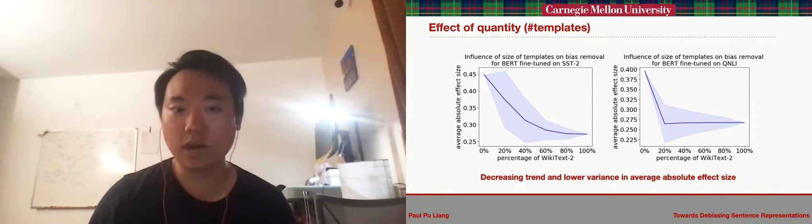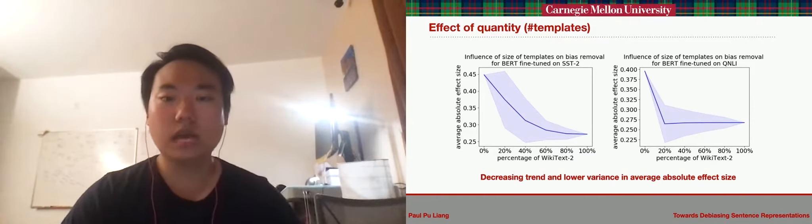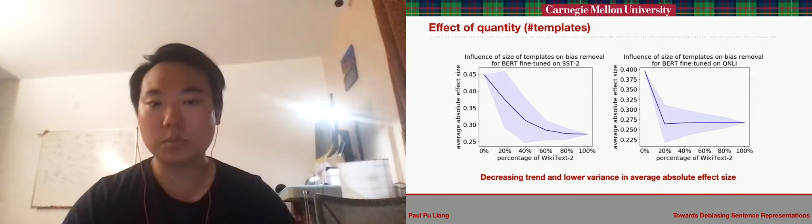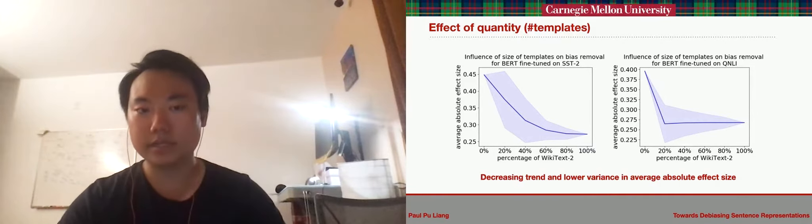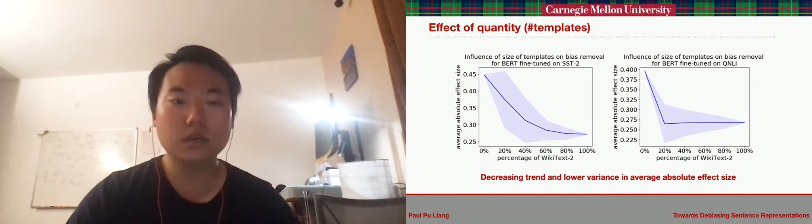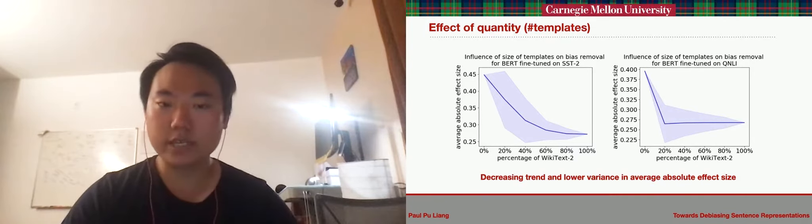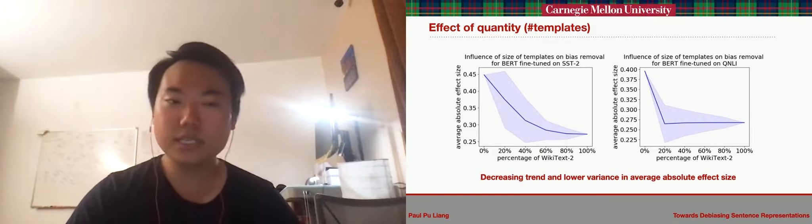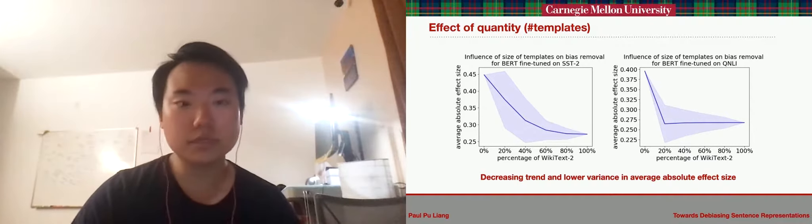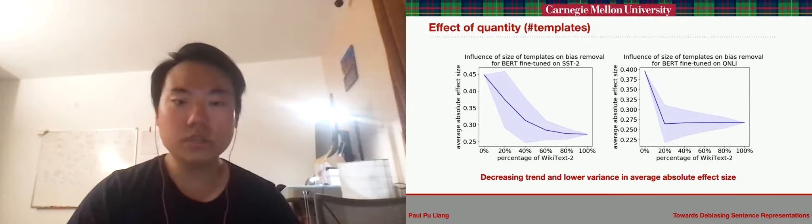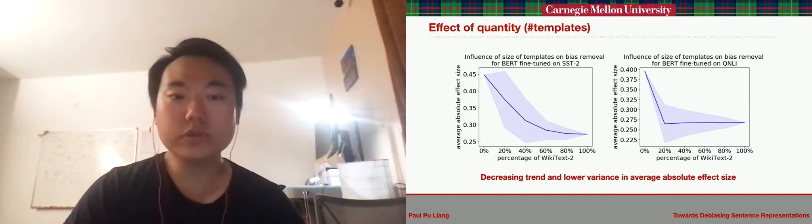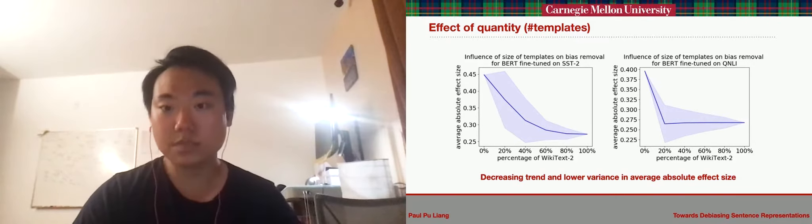We increase the number of randomly sampled partitions used for estimating the bias subspace for debiasing. We observe a decreasing trend in the effect size as increasing subsets of the data is used. Using a larger number of templates also reduces the variance and improves the stability of the algorithm.